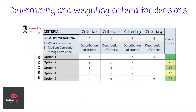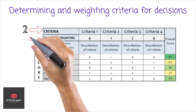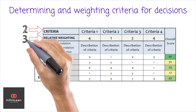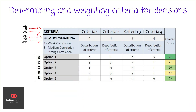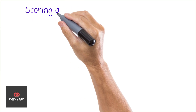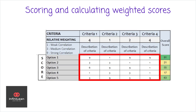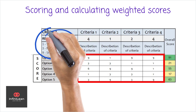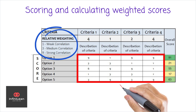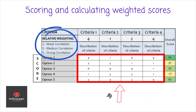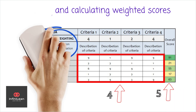Assign a weight to each criterion based on its importance — the higher the importance, the greater the weight. Next, score each option against the criteria, ranging from low to high, depending on how well they meet the criterion. Multiply the score by the criterion's weight to get a weighted score for each option, then add up these scores to get a total for each option.